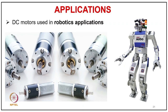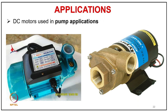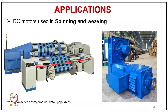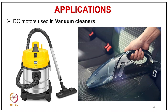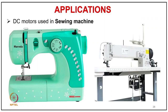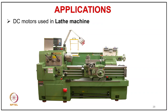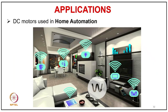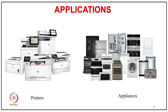DC motors are used in robotics applications as servo motors with gears to provide high torque, operated at low voltage and high speed, with gearing to tailor characteristics for robotics. They are also used in pump applications, conveyors, blowers, spinning and weaving, and handheld portable vacuum cleaners due to charging operations. DC motors are used in sewing machines, lathe machines as servo motors, electrical toothbrushes — mostly small DC motors with permanent magnet excitation. They are also used in elevators, home automation, printer ramp appliances, and mechatronics applications.